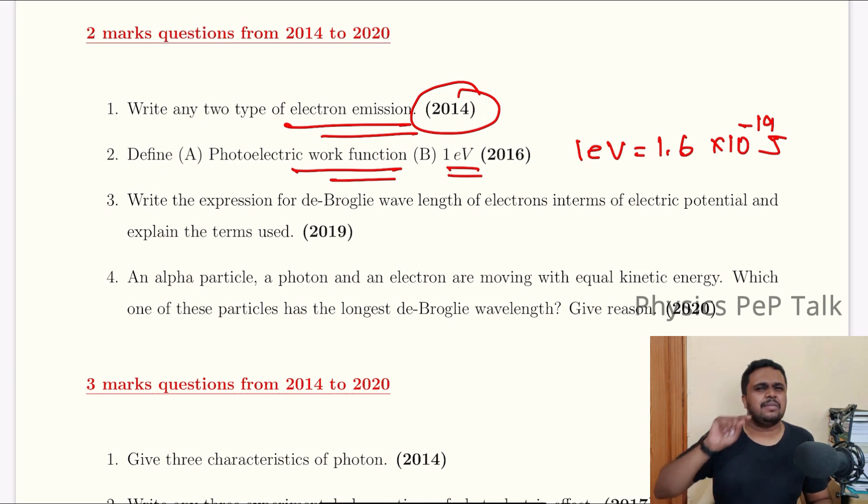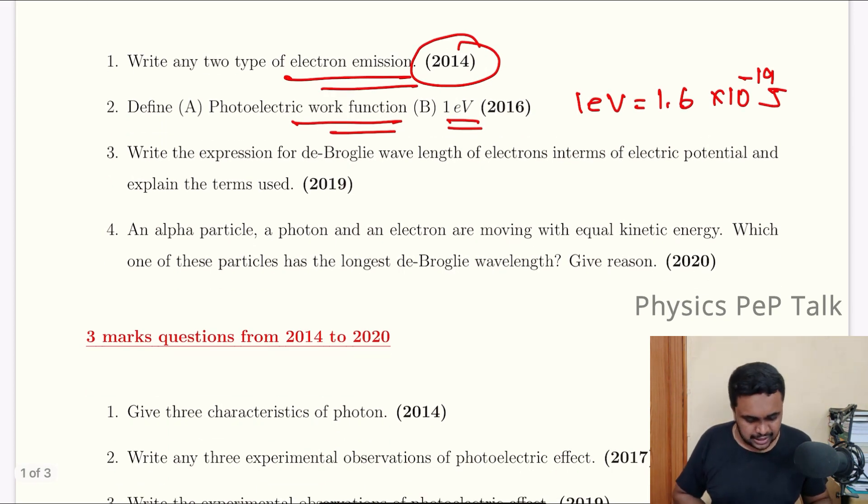Write the expression for de Broglie wavelength of electron in terms of electric potential and explain the terms. Lambda equals H by root of 2MeV. M is the mass of the electron, e is the charge of the electron, V is the accelerating potential, H is Planck's constant.